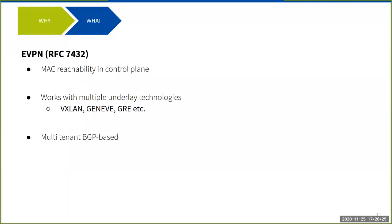EVPN, as defined in RFC 7432, is basically a MAC reachability protocol. Unlike traditional networking where dynamic MAC learning tells us which MAC address is behind which port or VTAP, the idea behind EVPN is that with the help of a control plane, we can advertise that this MAC is behind this endpoint or VTAP. This is especially helpful in overlay network environments, where a packet can be tunneled directly to the corresponding VTAP. Key facilities provided by EVPN include that it works with multiple underlay technologies — it's not tied to any specific underlay protocol, so it works with VXLAN, Geneve, and GRE. It uses the standard BGP-based protocol for message passing, which is widely adopted in any data center environment.